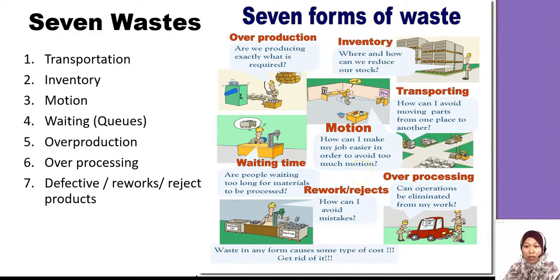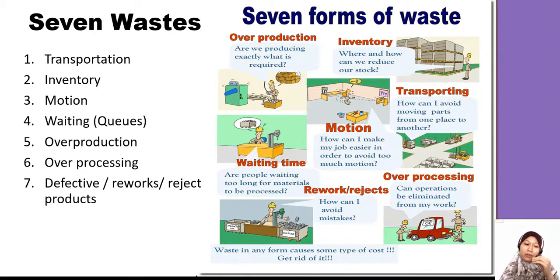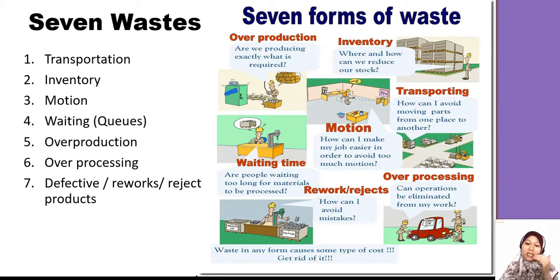There are seven types of waste that you need to identify. The first one is transportation. Sometimes you move things — for example, a forklift. Maybe every day you make about 20 trips. When you study it for improvement, you realize that each trip you did not optimize the space on the forklift. So after doing the study, you realize you only need 10 trips per day. So we need to do the improvement.